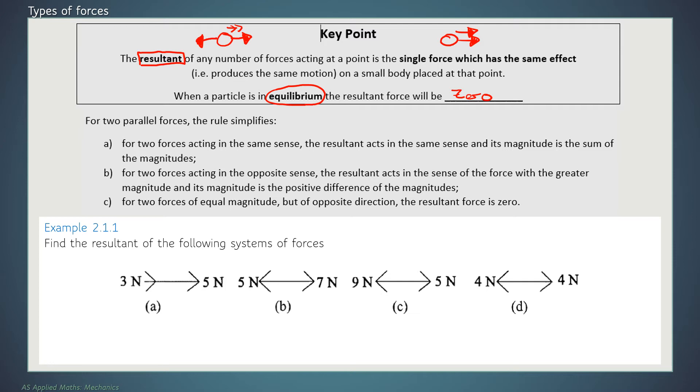When you're looking through these three points, the word magnitude means size. So we're talking about the size of the forces. If you've got two forces acting in the same direction, the resultant is going to act in the same direction. And the size of the resultant force is the sum of the size of the original forces. So if I do example 2.1.1, we've got three newtons and five newtons, both pointing towards the right. The resultant force here is three plus five, which is eight newtons. And that would be acting in the same direction as the original forces.